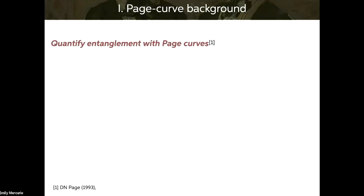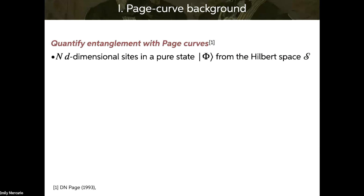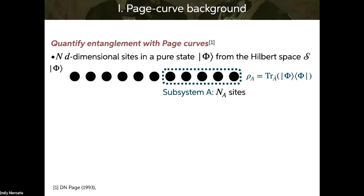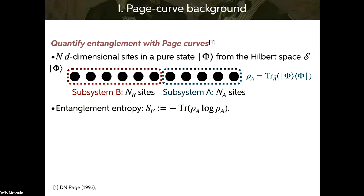For the page curve background, I'm going to walk through a calculation of a page curve — a way to quantify entanglement in a system. Say I have N d-dimensional sites in some pure state phi drawn from some Hilbert space S. I can break this system into subsystem A with N_A sites in some reduced state rho_A, and subsystem B with N_B sites. The entanglement entropy is the von Neumann entropy of rho_A. If the two subsystems are entangled, the entanglement entropy will be greater than zero. Clearly, it depends on the state phi and on where we cut the system.